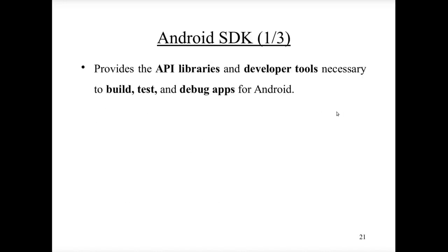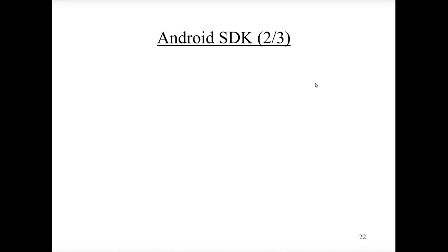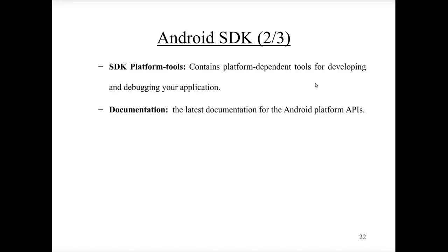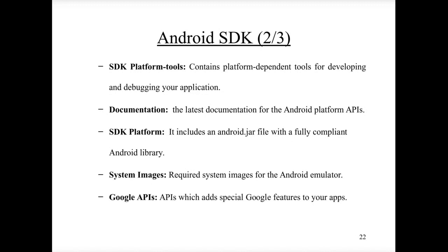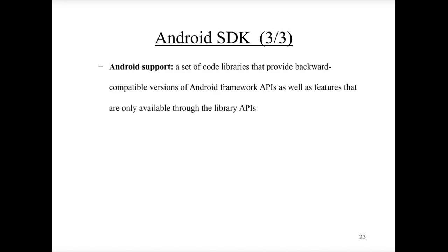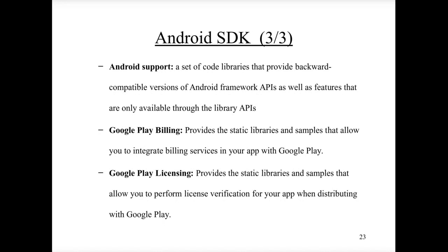The Android SDK provides API libraries and developer tools necessary to build, debug, and test Android applications. It includes build tools, SDK tools, platform tools, rich documentation, SDK platforms, system images, and Google APIs to use Google features in your app. It also has libraries for backward compatibility with Android framework APIs, Google Play billing, and Google Play licensing.